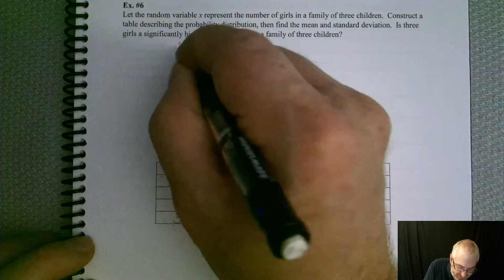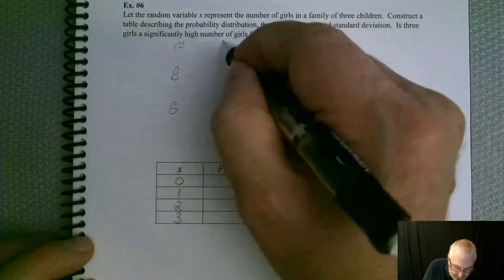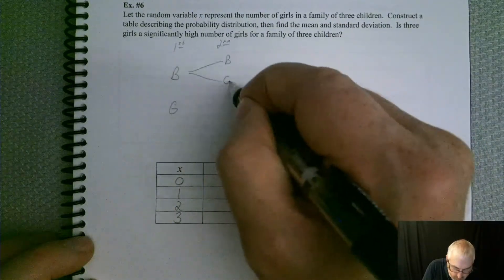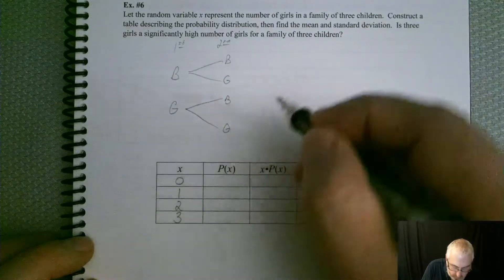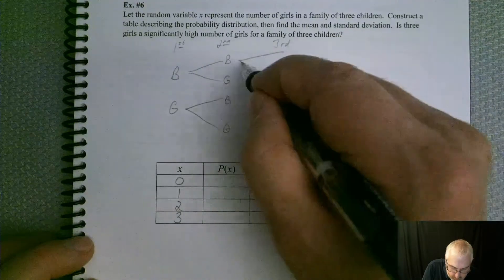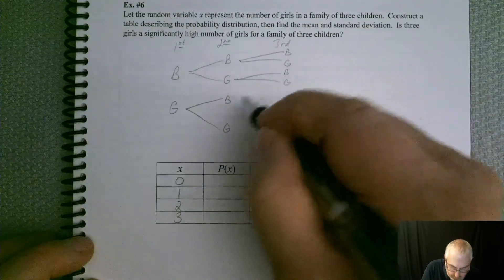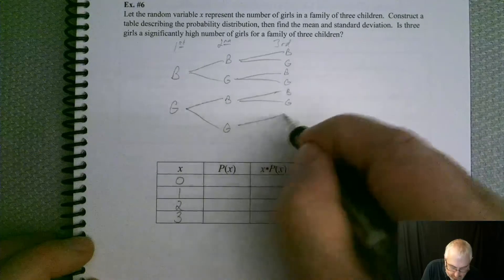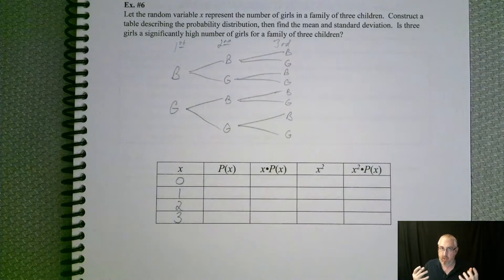So the first child is either going to be a boy or a girl. The second child is a boy or a girl, or a boy or a girl. And then the third is a boy or a girl, or a boy or a girl. Now, if you don't need a tree diagram, obviously you don't have to do one, but it just helps visualize it a little bit easier.